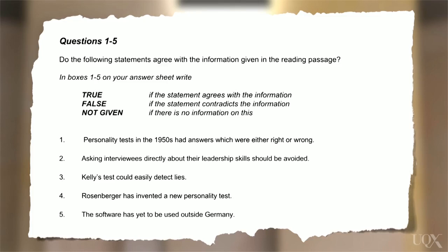Now look at the questions. You need to read the statement and then look for this information in the text. Let's try to do question one. We're looking for information about personality tests in the 1950s and whether the answers were either right or wrong — so they were very black and white; you couldn't answer maybe or I don't know. Let's try to remember that when we read the text.